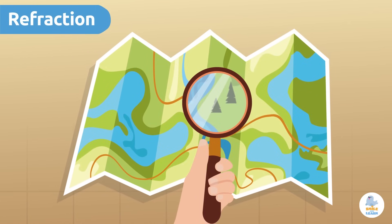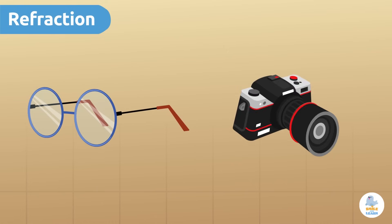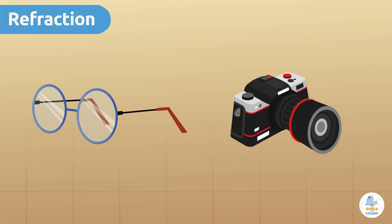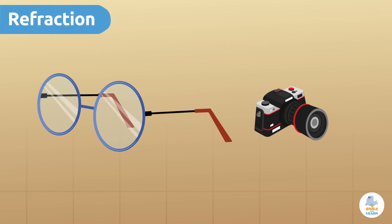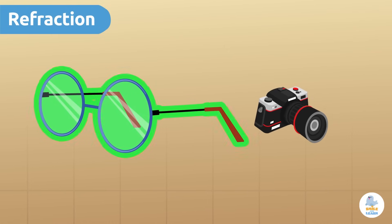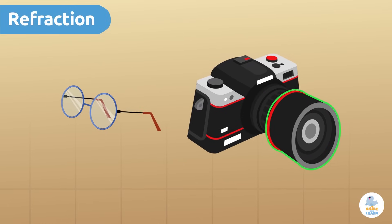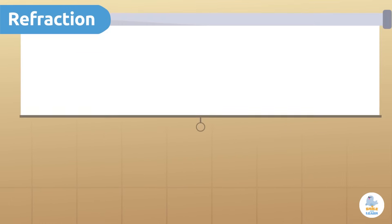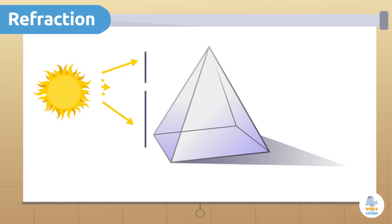This property causes us to see objects differently, like when we look at an object through a magnifying glass. Refraction is the property we use to create lenses, which you can find for example in eyeglasses or camera lenses. Refraction is also the property that allows white light to be broken down into different colors.